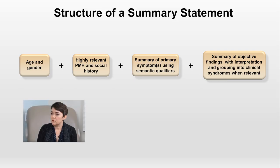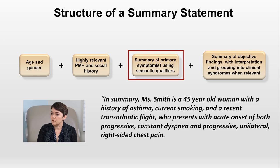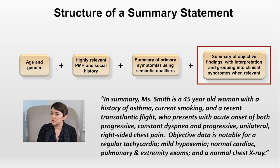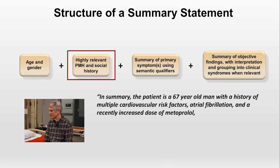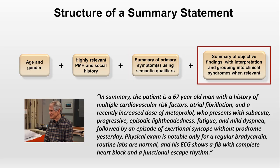Applying this structure to Judy's case: In summary, Ms. Smith is a 45-year-old woman with a history of asthma, current smoking, and a recent transatlantic flight, who presents with acute onset of both progressive constant dyspnea and progressive unilateral right-sided chest pain. Objective data is notable for a regular tachycardia, mild hypoxemia, normal cardiac, pulmonary, and extremity exams, and a normal chest X-ray. Returning to the first patient, the same structure was followed: the 67-year-old man with cardiovascular risk factors, AFib, and recently increased metoprolol, presenting with subacute progressive episodic symptoms and exertional syncope without prodrome, with bradycardia on exam and AFib with complete heart block and junctional escape rhythm on ECG.